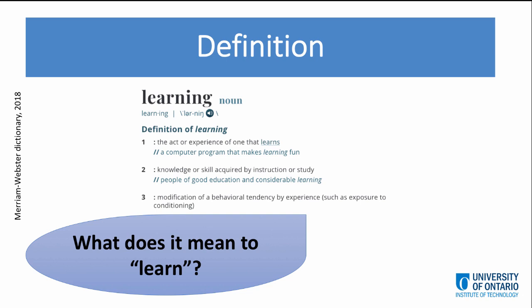Looking at the third definition, we see that learning may change behavior. Behavior modification is often a byproduct of actual learning. So as we acquire skills and knowledge, we meld these with our previous experiences, skills, and knowledge, and then we adjust our behavior.